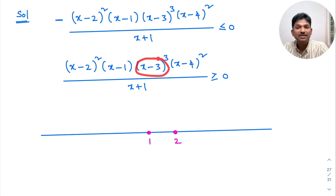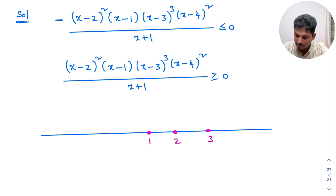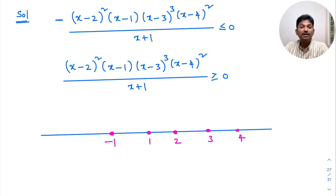Continuing: (x-3) = 0 gives x = 3; (x-4) = 0 gives x = 4; (x+1) = 0 gives x = -1. So there are 5 numbers marked on the number line: -1, 1, 2, 3, 4.